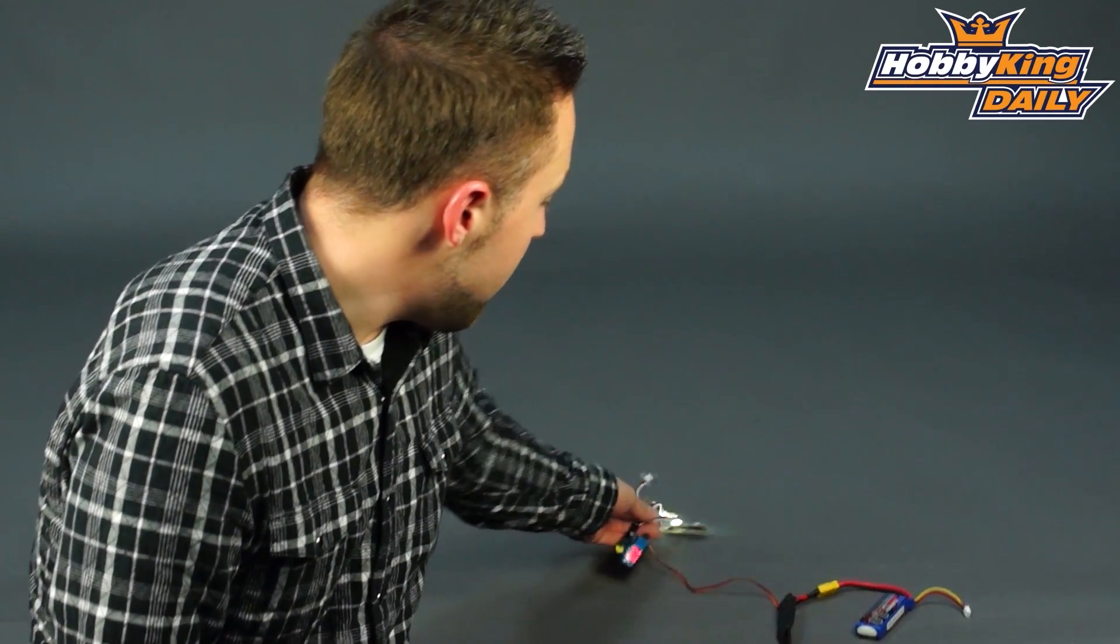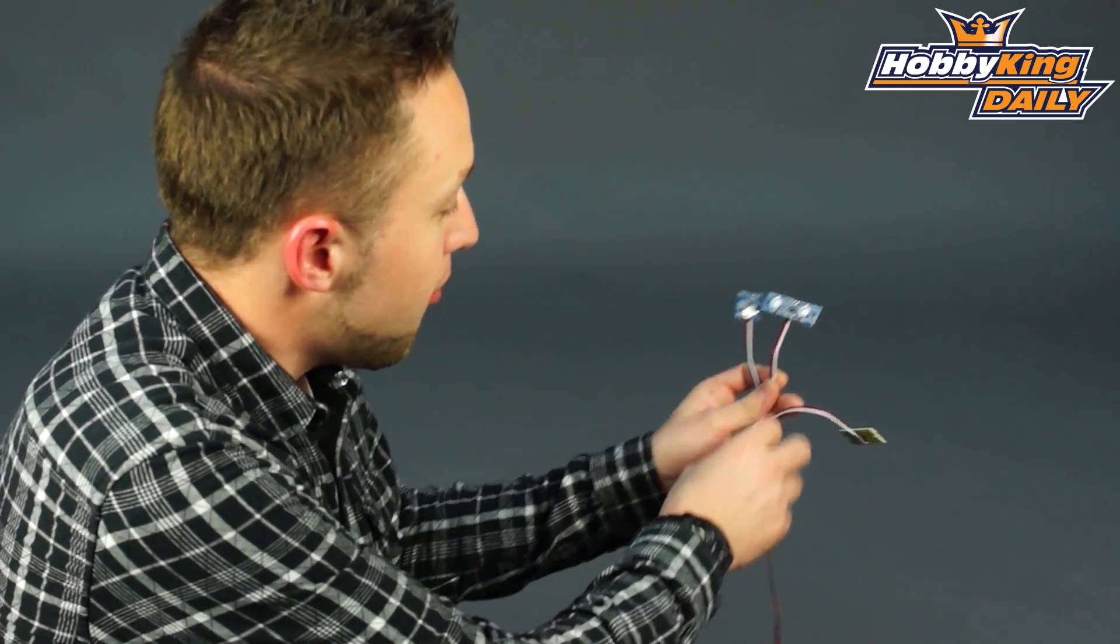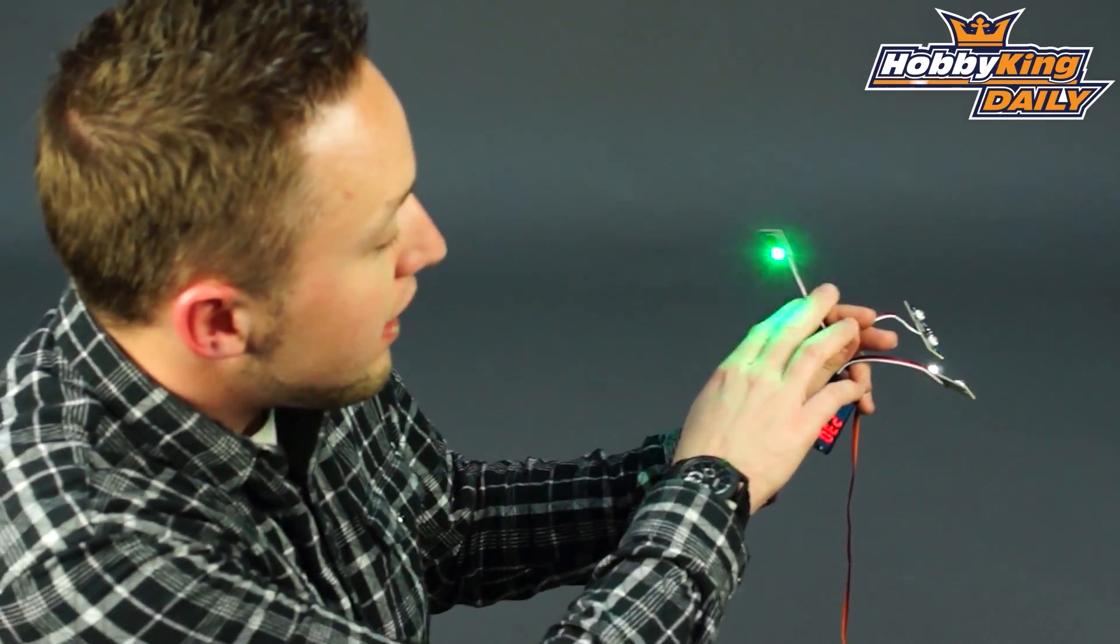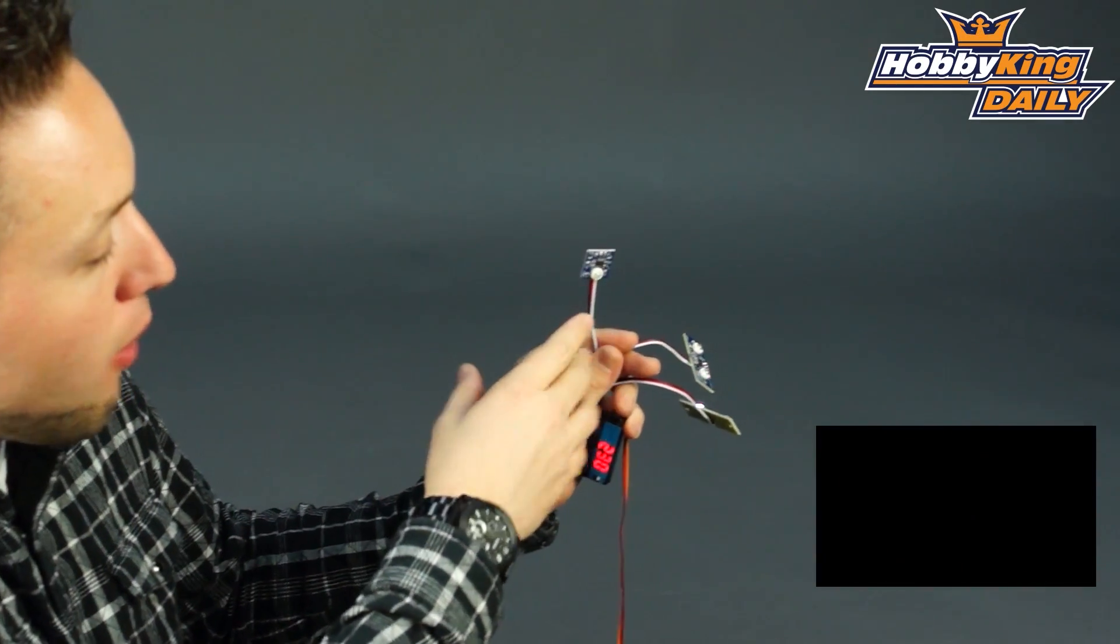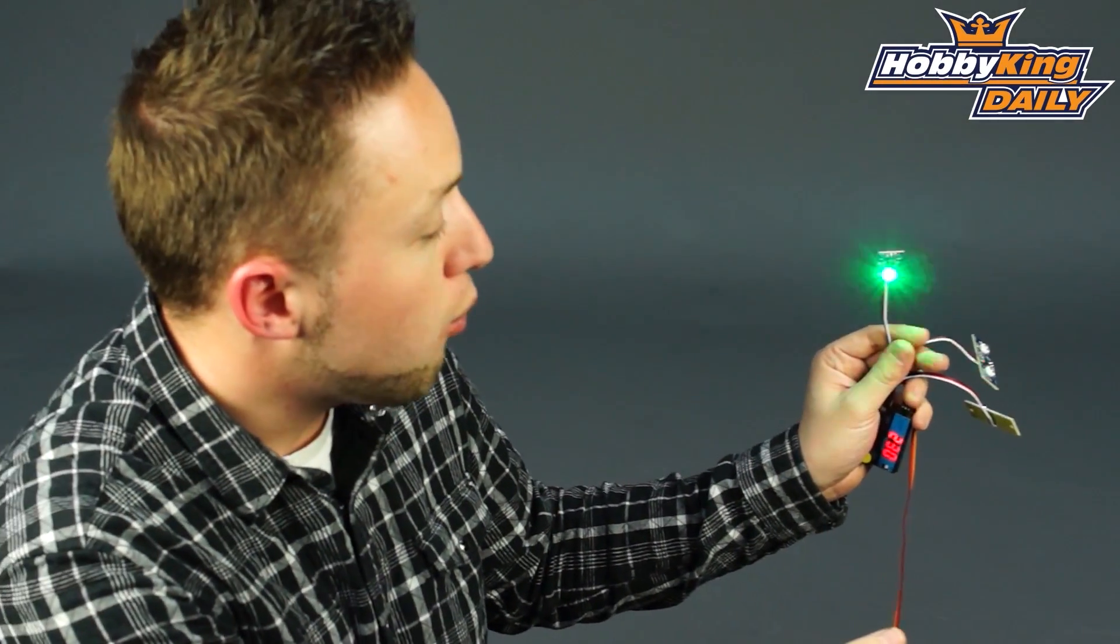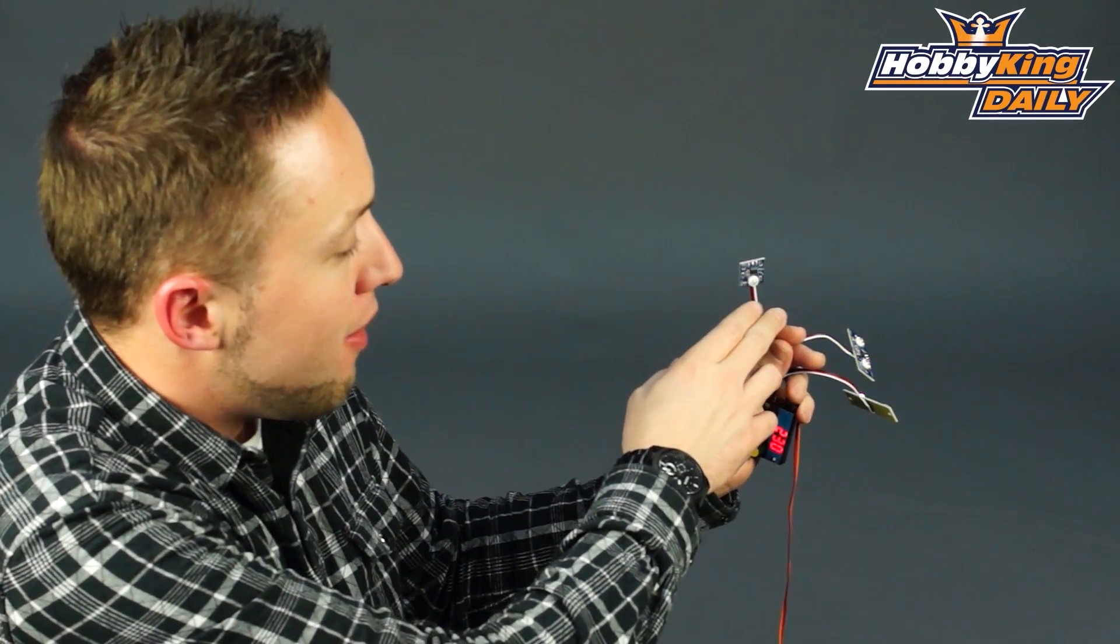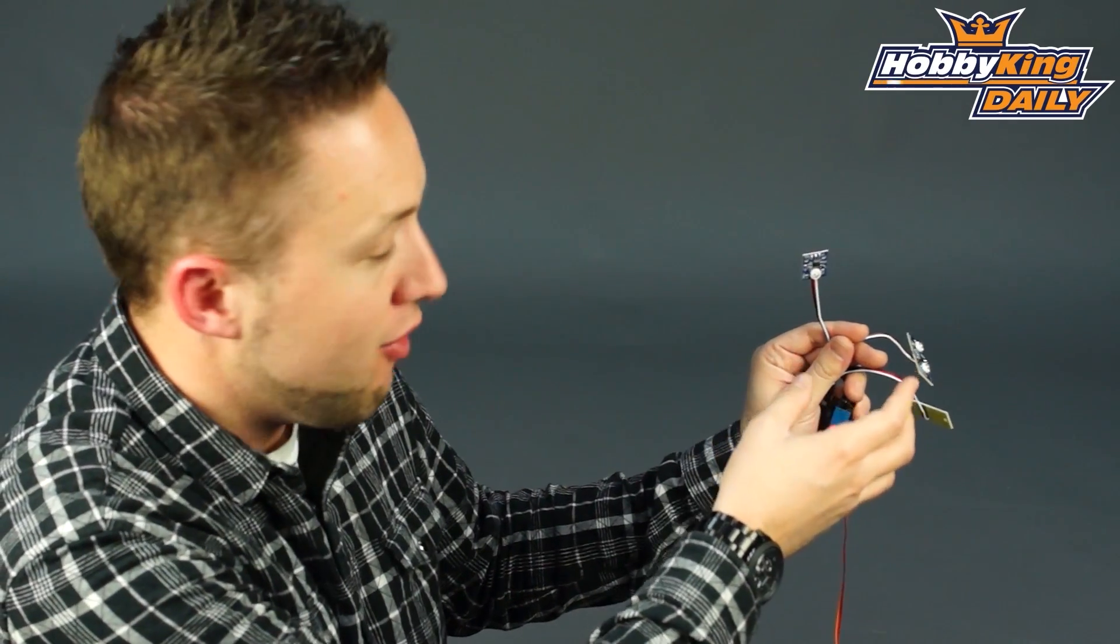Now we have a few different variations of these. We've got a single LED, which this one comes in four different colors. You've got green, we also offer blue, red, and white as well. And just a basic LED, just a strobe, just flashes. It's constant rate.